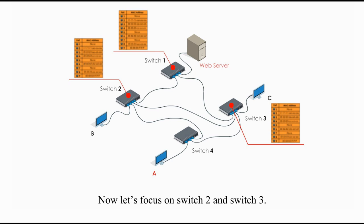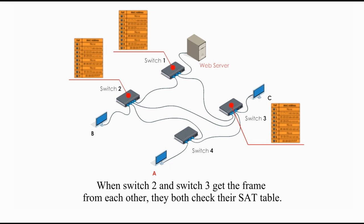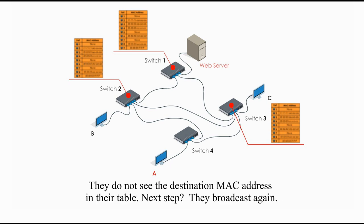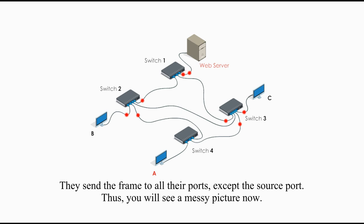Now, let's focus on switch 2 and switch 3. When switch 2 and switch 3 get the frame from each other, they both check their set table, they do not see the destination MAC address in their table. Next step, they broadcast again. They send the same frame to all their ports, except the source port.